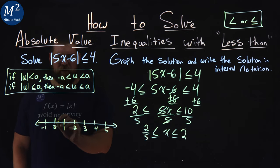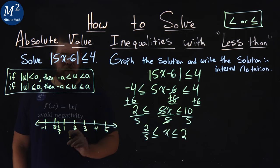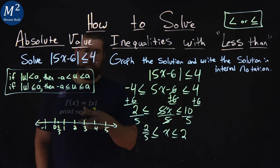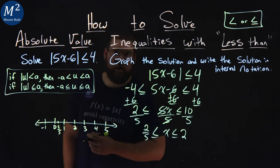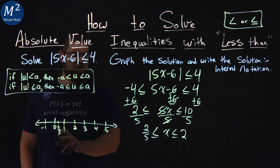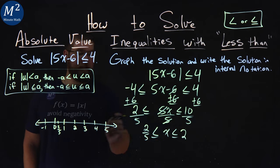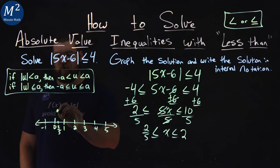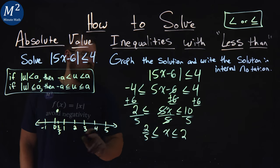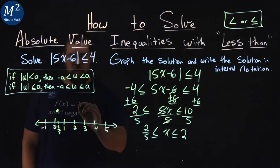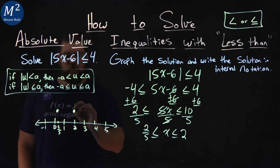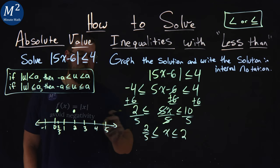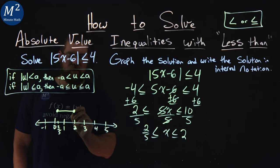2 fifths, I'll put it right here. Now you could make this even smaller and go by one-fifths increments, but I think you'll get the gist. At 2 fifths, we have a closed circle because we can equal that value. Then we go all the way up to 2—closed circle as well. We can equal that 2, that's why it's closed. x can be every single value in between.